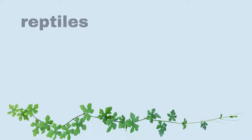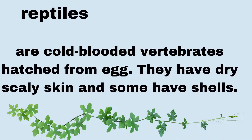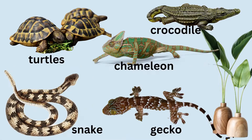Another group of vertebrates are reptiles. They are cold-blooded animals hatched from eggs, or oviparous. They have dry, scaly skin and some have shells. Examples of reptiles are turtles, crocodile, chameleon, gecko, and snake.